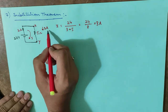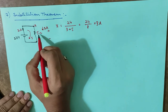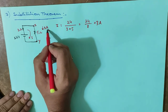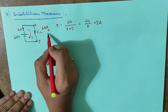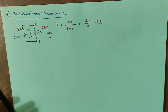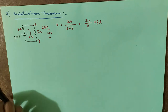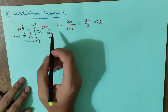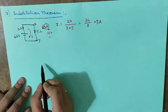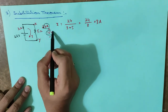Now I need to find the voltage across this branch. According to Ohm's law, the voltage is 5 ohms multiplied by 3 amperes, which equals 15 volts. So this branch has 3 amperes of current flowing through it and 15 volts across it.